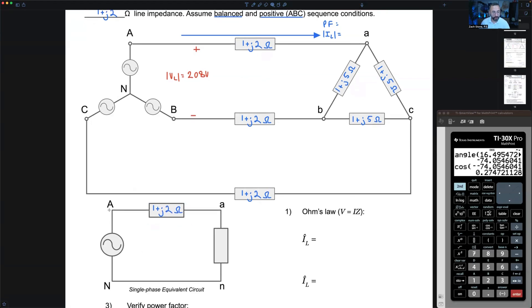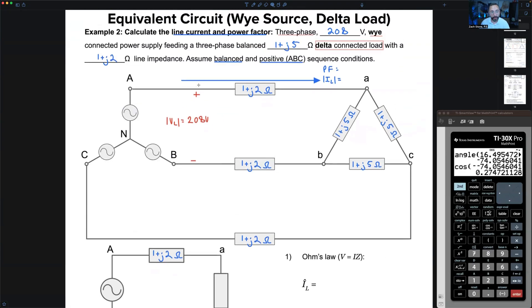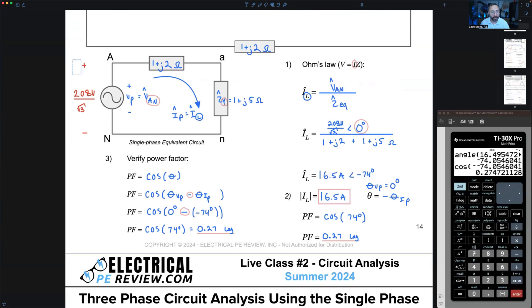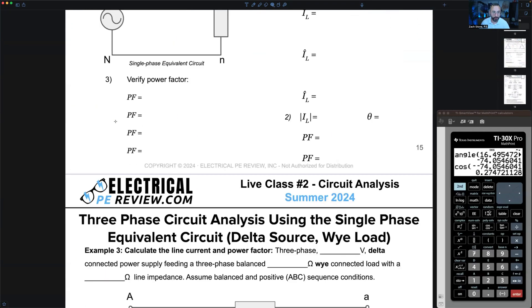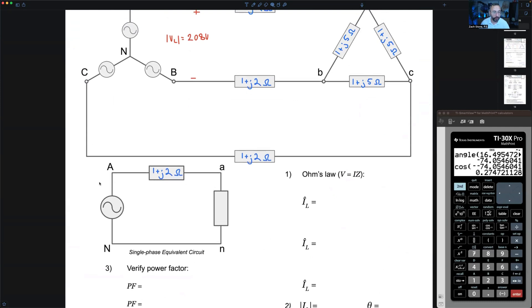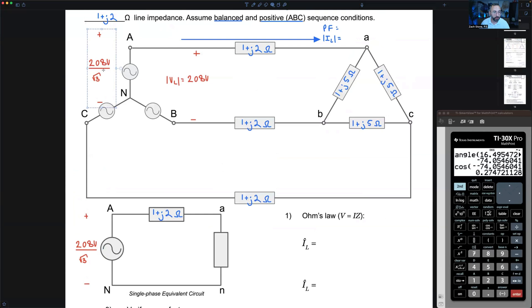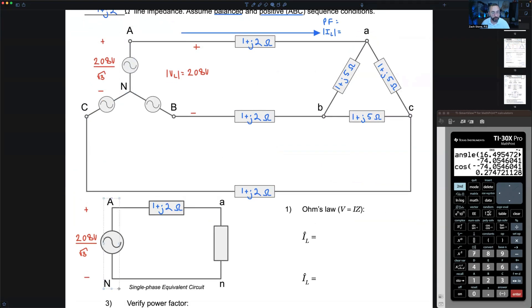What about our voltage A to neutral? If I've got 208 volts from A to B and it's Y connected, then from A to neutral I take my line voltage 208 volts and divide it by the square root of three. That's our Y phase voltage from A to neutral in our single-phase equivalent circuit.